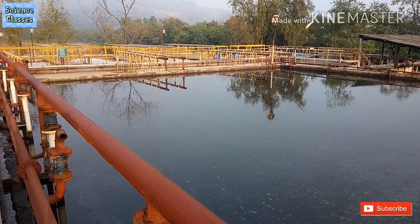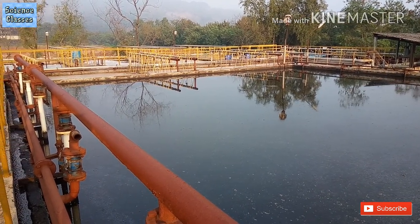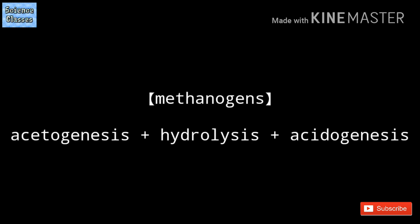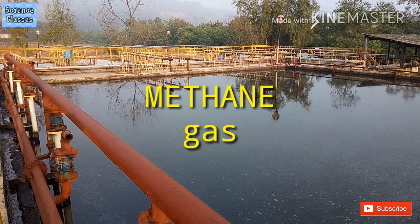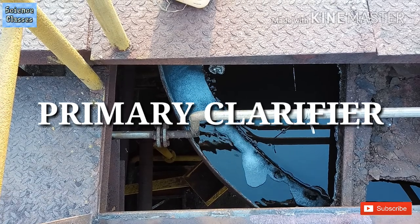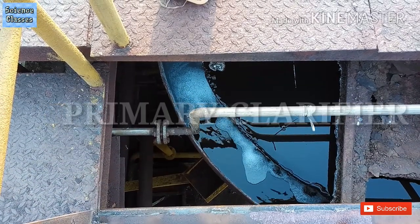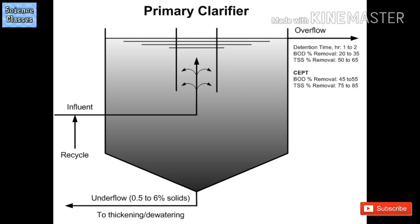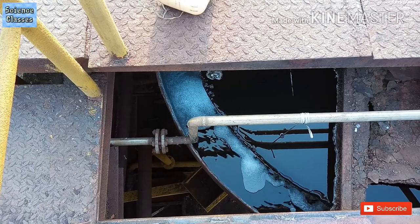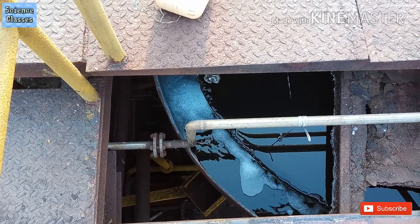Methanogenesis, Anaerobic Digestion की Final Process है, जिसमें Methanogens, Acetogenesis, Hydrolysis और Acidogenesis के Intermediate उत्पादों से Methane Gas का निर्माण करते हैं। Periodically Return Sludge Pump से वापस टैंक में Pump किया जाता है।